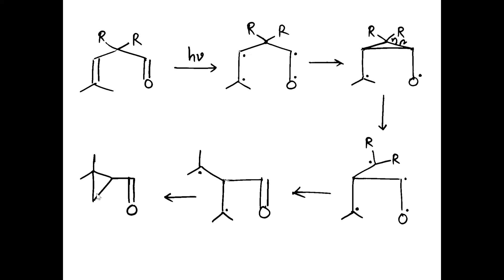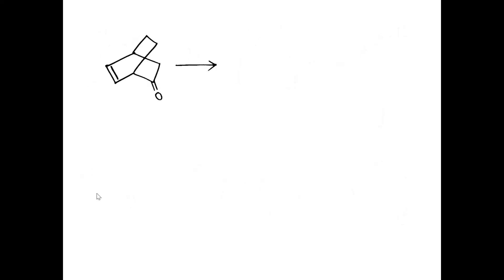So, in di-pi-methane rearrangement you get cyclopropane with a double bond; in aza-di-pi-methane also cyclopropane ring with imine; in oxa-di-pi-methane also cyclopropane with a double bond — a carbonyl group. Let's see one more example of oxa-di-pi-methane rearrangement. Looking at the compound, if there is a double bond at positions one and four and the third carbon is sp3-hybridized, then oxa-di-pi-methane rearrangement is possible in this compound.